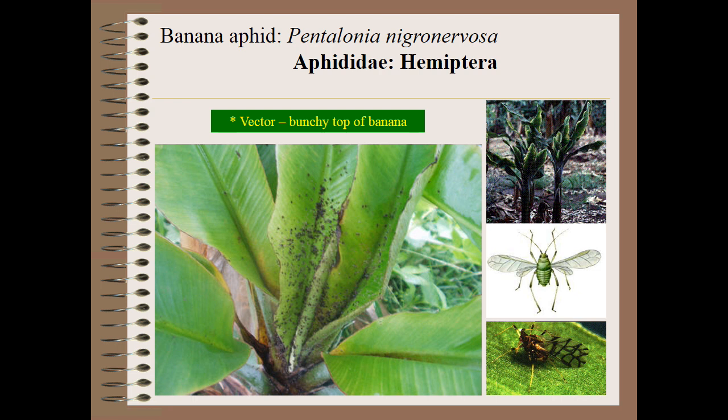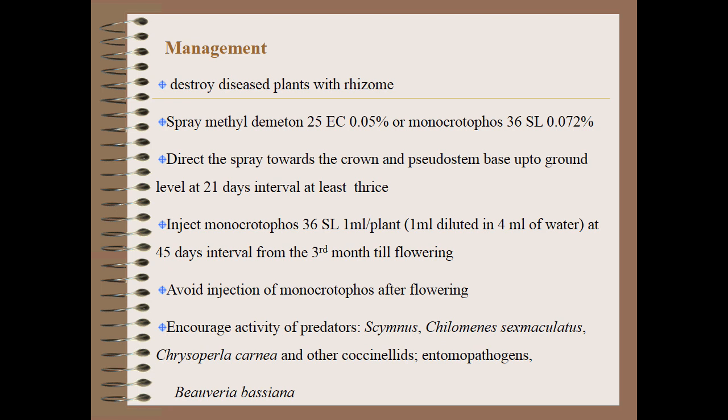Next is the importance of feeder insects. Banana aphids, Pentalonia nigronervosa, family Aphididae, order Hemiptera, are a vector of the important disease bunchy top of banana. They are seen in colonies on leaf axils and pseudostems. Females can produce 30-50 young ones by parthenogenesis. For management, destroy the affected plant parts with rhizomes, and spray ethyl demeton or monocrotophos. Inject monocrotophos at 1 ml per plant diluted in 4 ml of water, at 45-day intervals from the third month to flowering.